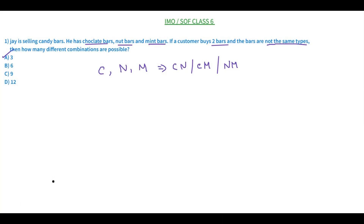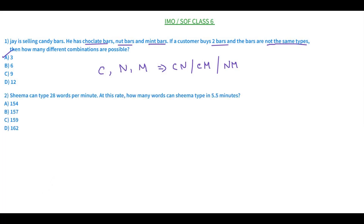If you found this video interesting, click on the subscribe button, hit the bell icon for regular updates, and don't forget to click the like button. Now let's see the second question for today. Shima can type 28 words per minute. At this rate, how many words can Shima type in 5.5 minutes? Note that 5.5 minutes is 5 minutes and 30 seconds. As usual, break the sentence: in one minute she types 28 words.